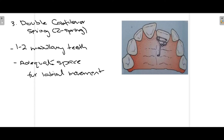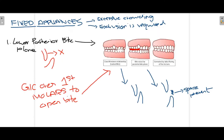These three appliances — tongue blade, Catalan's appliance, and Z-spring — are all used in correction of anterior crossbite with removable appliances. It depends on the patient: in some cases Catalan's appliance is used, in some tongue blade, and in others Z-spring. Moving on, fixed appliances for anterior crossbite correction are mainly used when there is excessive crowding or when extrusion of teeth is required.